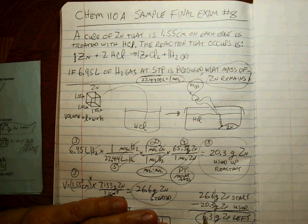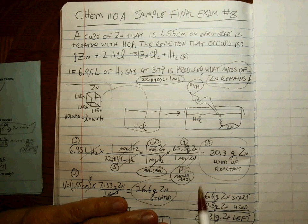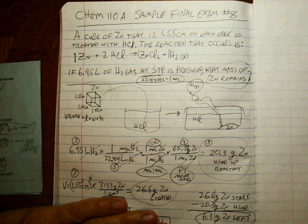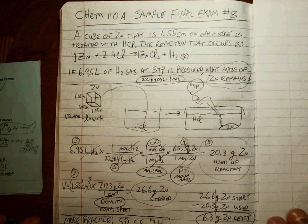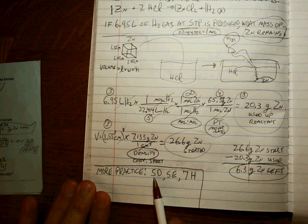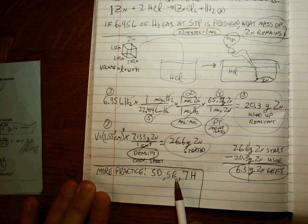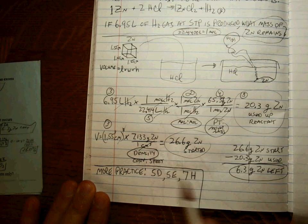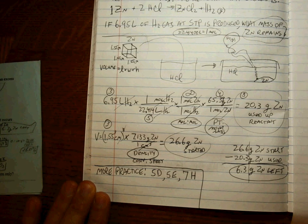That's your answer — it has two sig figs because we did addition/subtraction at the end. This is a complicated problem; it will definitely be the longest problem on the exam and should be the last one you do. To practice, work on problems 5D, 5E, and 7H, and think about what all that information gives you. Good luck!